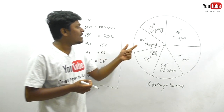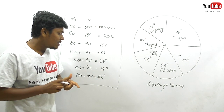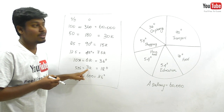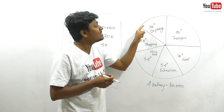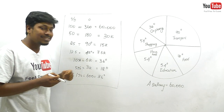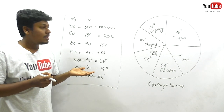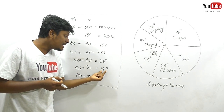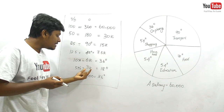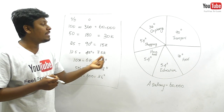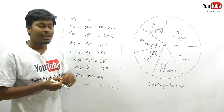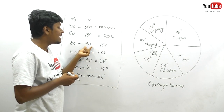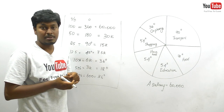For 36 degrees (orphanage): 18 × 2 = 36, so 3k × 2 = 6k. He spends 6,000 on orphanage. For shopping at 54 degrees: 18 × 3 = 54, so 3k × 3 = 9k — he spends 9,000 on shopping. For transport at 90 degrees: we already know 90 degrees = 15k, so he spends 15,000 on transport.